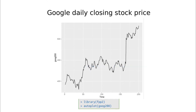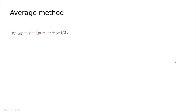Looking at the real data, you see some huge values — something happened, probably Google bought YouTube or something — and then you have these huge dips. So you could guess that probably everything you've tried to do until now is not going to be very accurate.